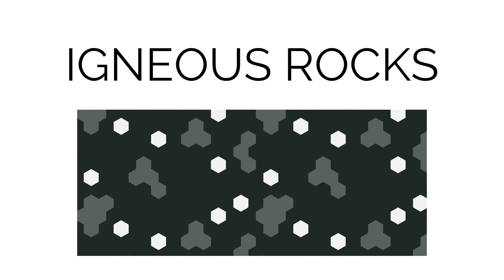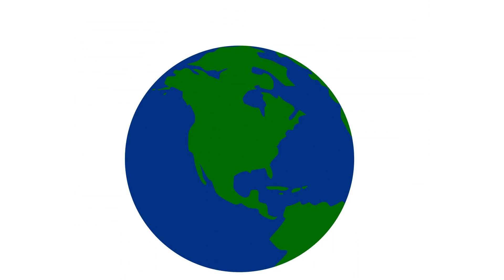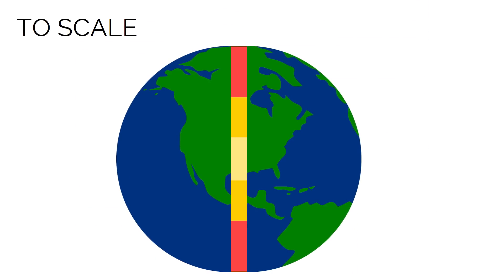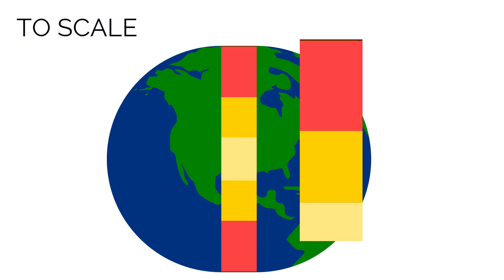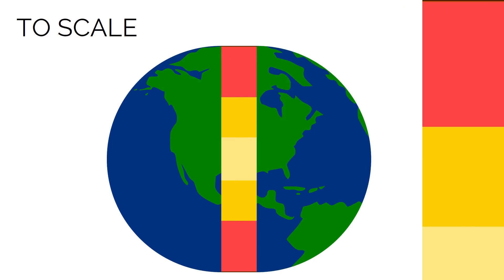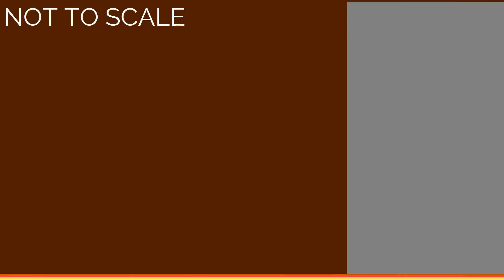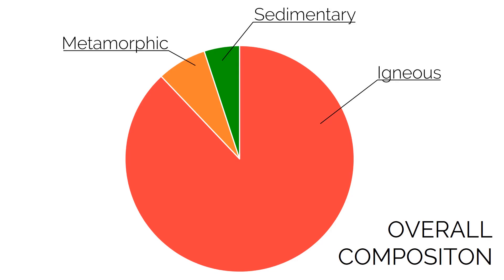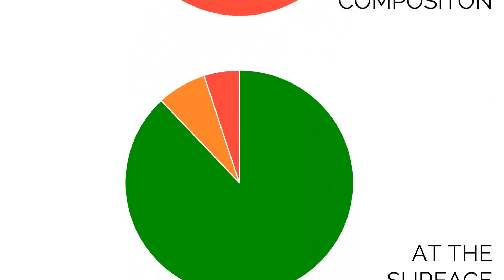These are split up into plutonic and volcanic. The earth is big and it has a small crust, just 35 kilometres thick, and most of it is rock. In fact, igneous rocks make up 88% of the earth's crust. Sedimentary and metamorphic rocks make up the remaining 12%.